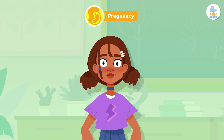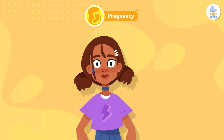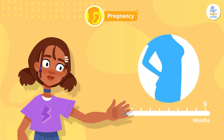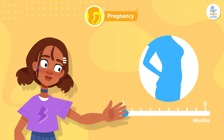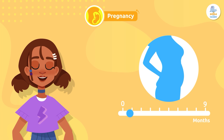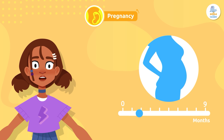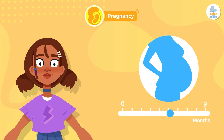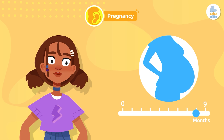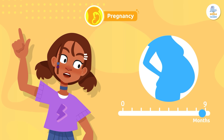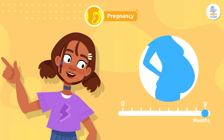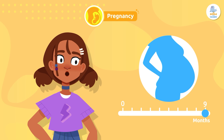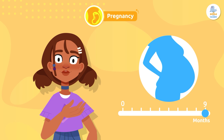When the zygote implants itself in the uterus, the second stage of reproduction begins: pregnancy. It lasts approximately 40 weeks, or about nine months. During the pregnancy, a human being gradually forms inside the mother.